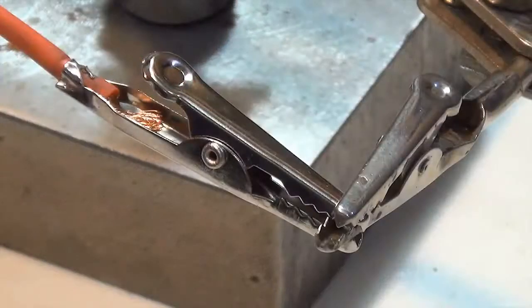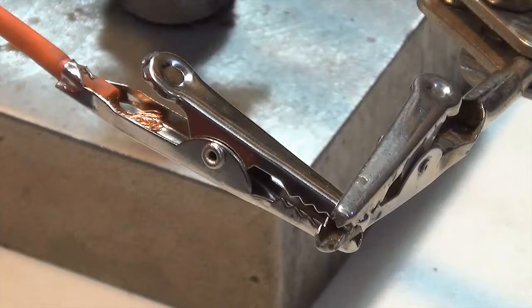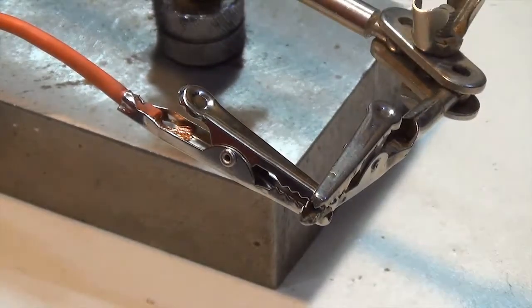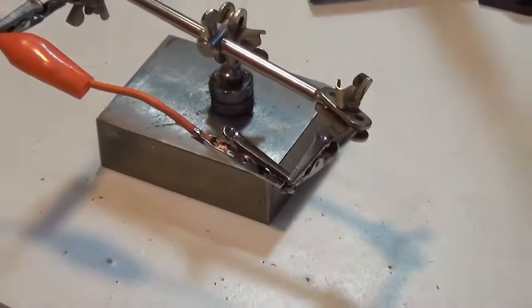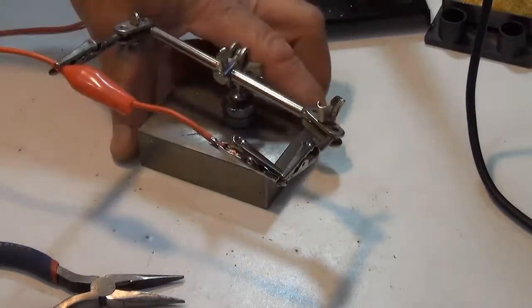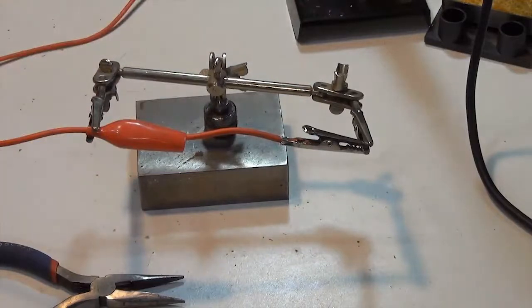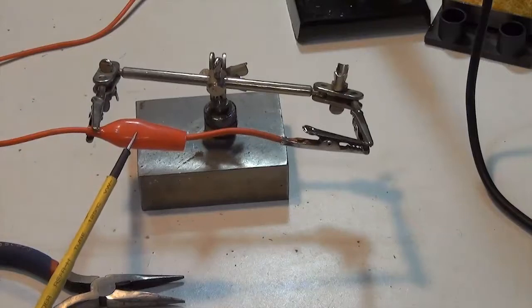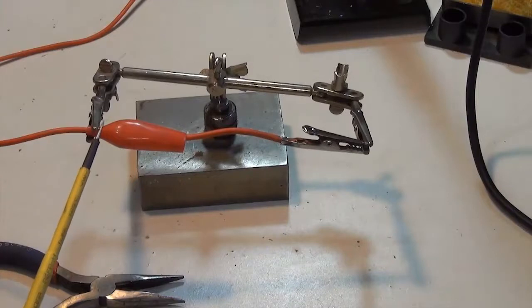I've completed the crimp connection and I'm using a set of helping hands to hold everything while I'm completing the solder connection onto the alligator clip. The helping hands are really quite useful for this task. I'm using the boot from the alligator clip to protect the wire from damage while I'm holding it in the helping hands. I don't want to damage the insulation on the wire.